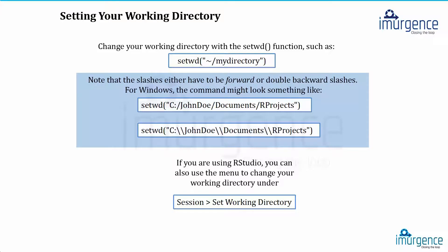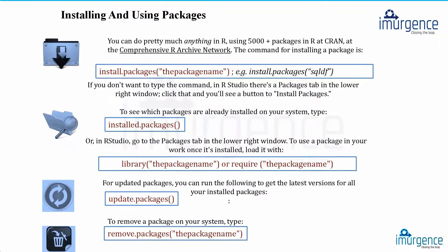Setting your working directory is done using the setwd command — either in your script window or console. It's advisable to write all your codes in the script window so they are documented. setwd means 'set working directory' — it defines where your basic folders and files will be written. Note that the slash direction matters: depending on the version you're using, you may need a forward slash or a backward slash.